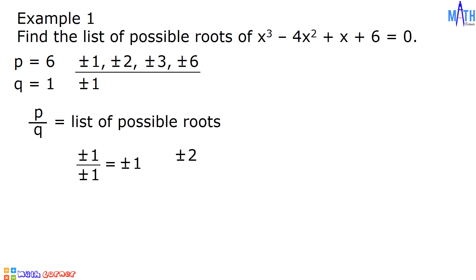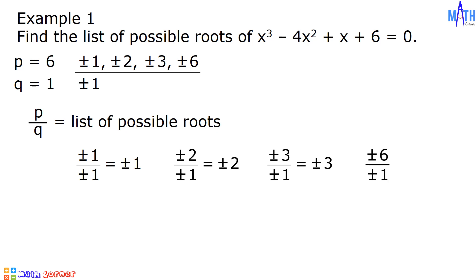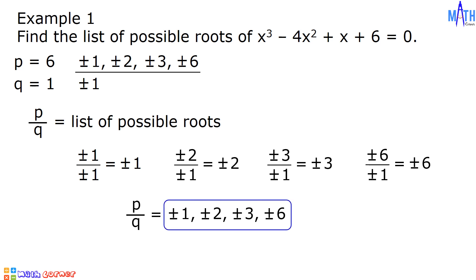Next, positive and negative 2 divided by positive and negative 1 equals positive and negative 2. Positive and negative 3 divided by positive and negative 1 equals positive and negative 3. And lastly, positive and negative 6 divided by positive and negative 1 equals positive and negative 6. Therefore, p over q equals positive and negative 1, positive and negative 2, positive and negative 3, and positive and negative 6. This is the list of possible roots.